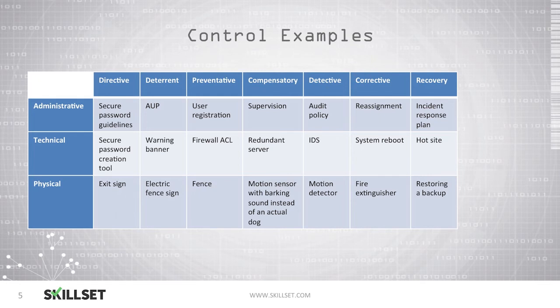Firewall ACLs allow administrators to selectively block or allow traffic on your network based upon a specific factor in the communication, such as an IP address. An example of a preventative physical control is a fence that attempts to keep unauthorized individuals off of the property.